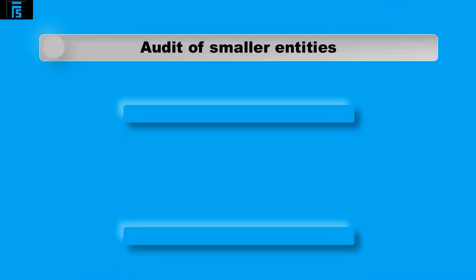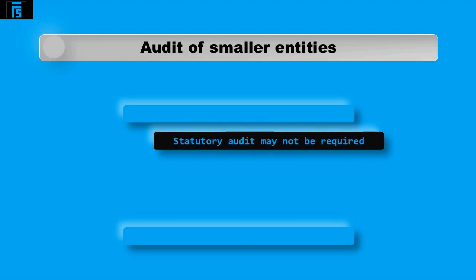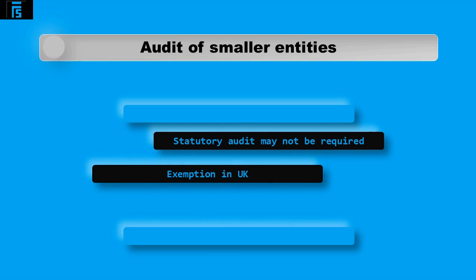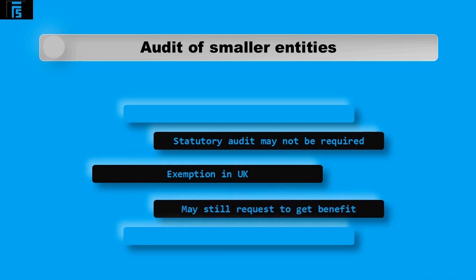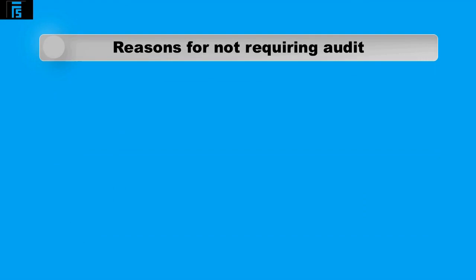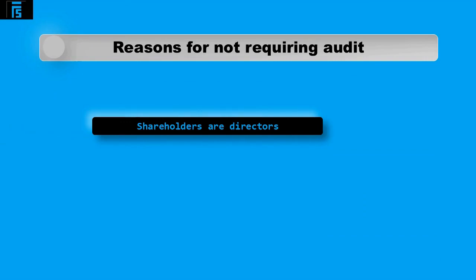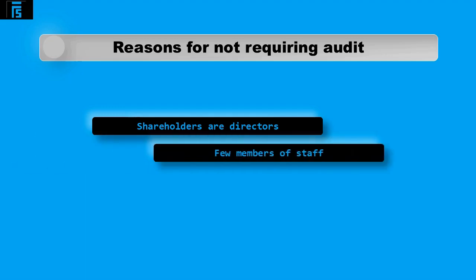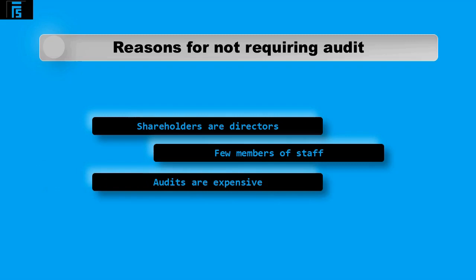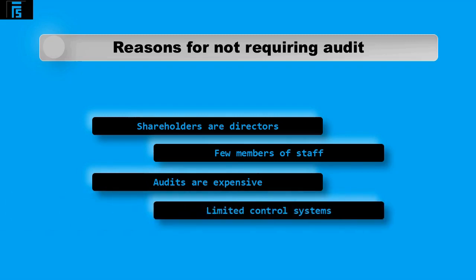We start by looking at the audit of a smaller entity, which may not even require a statutory audit in some countries. Smaller entities are given an exemption from auditing in the UK, for example, but may still request an audit if they feel it benefits them. The reasons for not requiring a statutory audit include: the shareholders are often the directors operating their own business; they may have only a few staff, making the disruption more burdensome; audits are expensive and costs may outweigh benefits; and control systems may be limited with fewer resources.